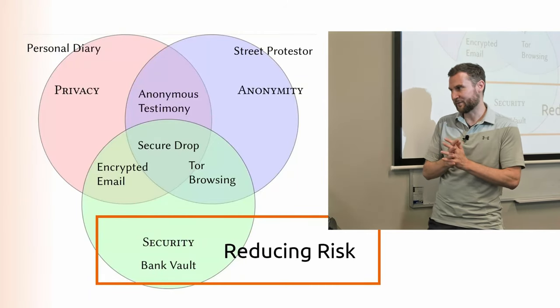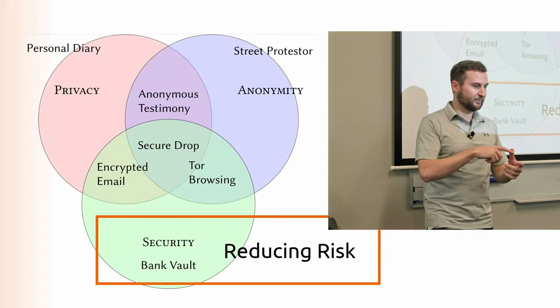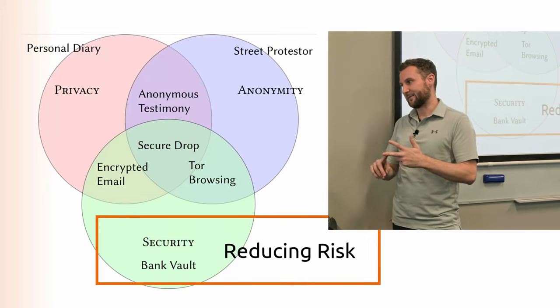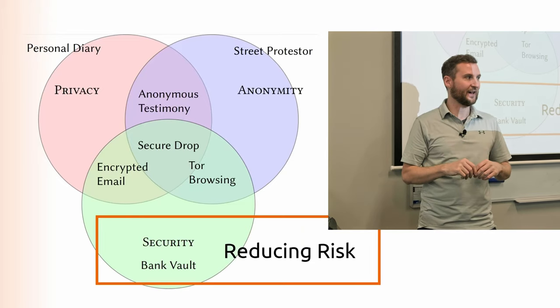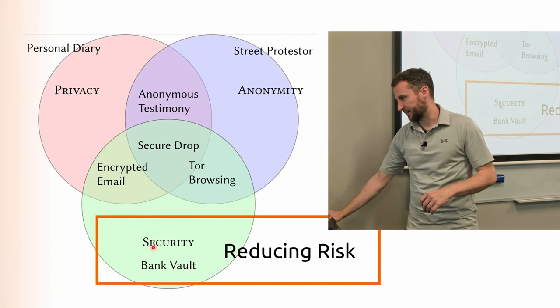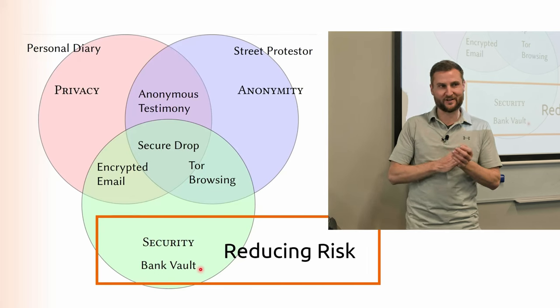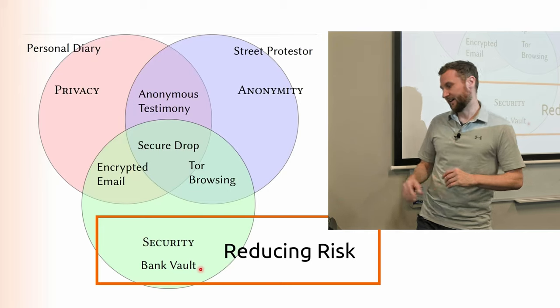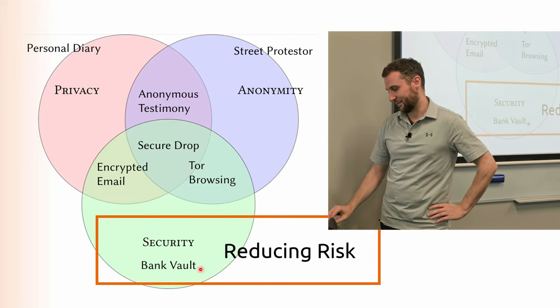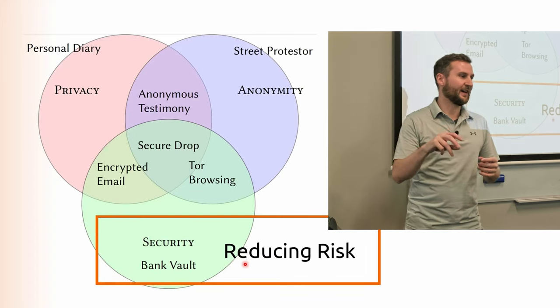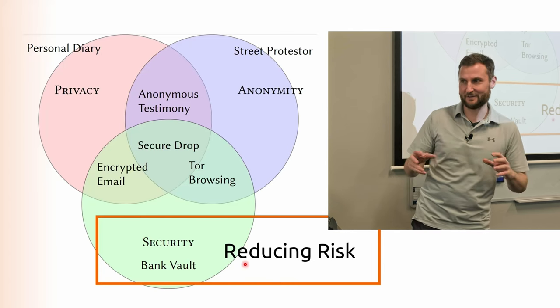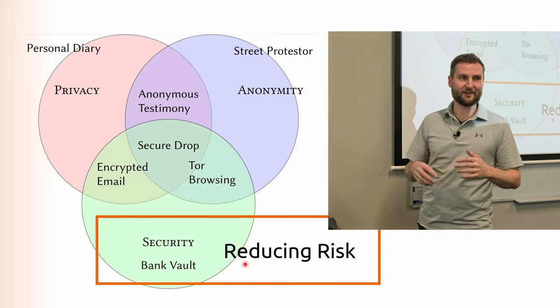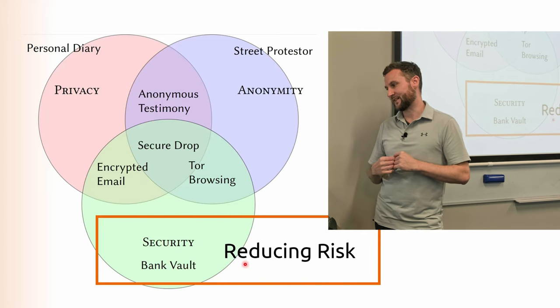A quick recap of what we talked about last week: we had this trade-off — this intersection between privacy, security, and anonymity — and we defined a few scenarios in those overlapping bubbles. In the security bubble, a classic example of things being secure is putting them in a bank vault, or if you don't like the centralized nature of that, you can manage security yourself — the DIY version, which will probably cost you more than outsourcing to a professional. Security means we want to reduce the possibility of theft — of digital or physical property.